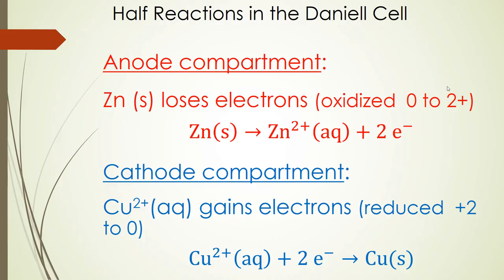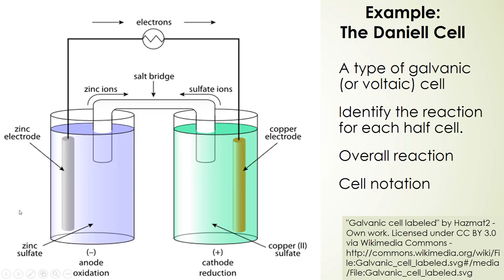In the Daniell cell, there are two half reactions. In the anode compartment, you can see that we have zinc sulfate in solution, and we have a zinc electrode. This is labeled as the anode compartment. It's always going to be on the left side in a galvanic cell, and oxidation happens in this compartment.